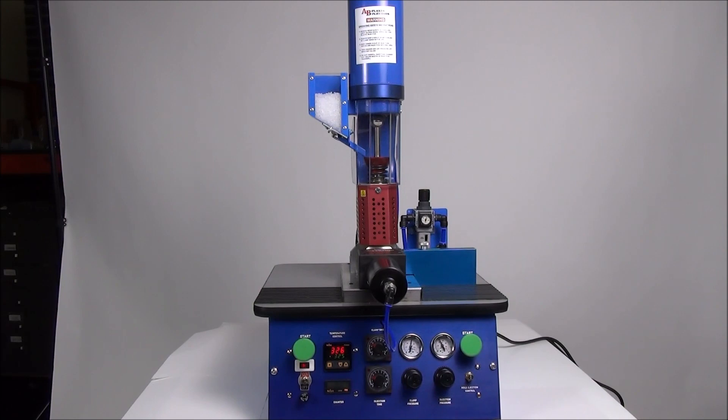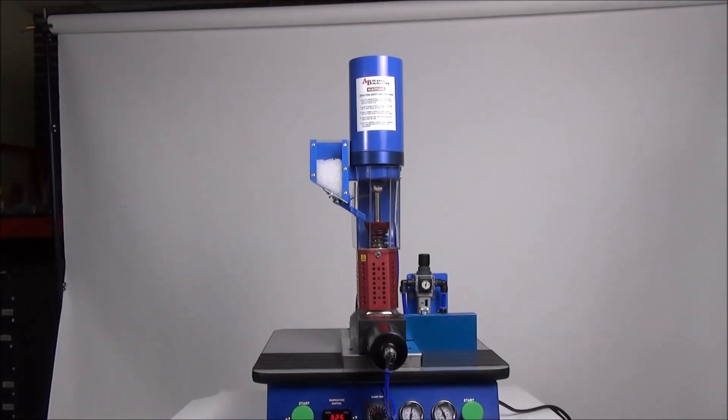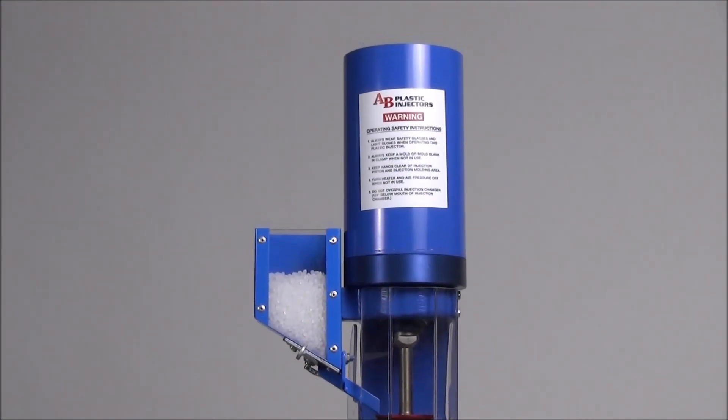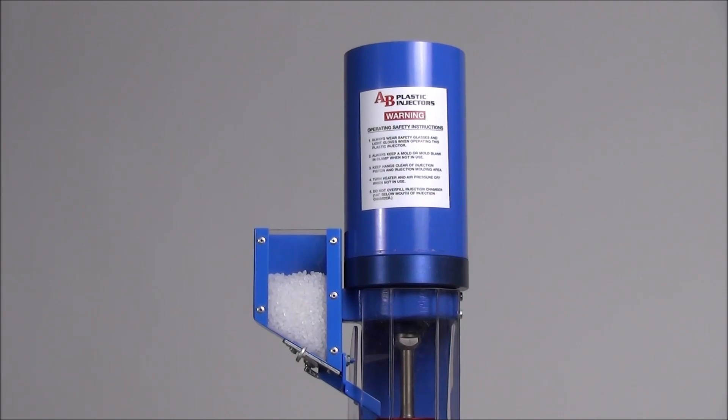Now let's review the components of this workstation from top to bottom. Sitting on top of its aircraft spec aluminum body is a 4 inch injection cylinder capable of over 6300 PSI at 125 PSI line in.